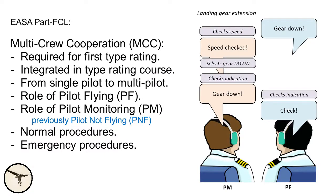EASA also requires a multi-crew cooperation course, or MCC, before your first type rating. It can be integrated in a type rating course. The MCC course takes you from a single pilot to a multi-pilot environment. You will learn the role of the pilot flying and the role of the pilot monitoring. You go through normal procedures — for example, when you want to extend the landing gear, the pilot flying shall not touch the landing gear lever but will call for 'gear down.' The pilot monitoring checks parameters, confirms speed is okay, selects gear lever down, checks the indication, and calls 'gear down.' The pilot flying checks the indication and says 'checked.' In this way, both pilots see and communicate what's happening.